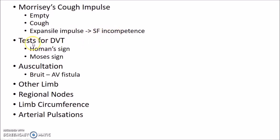There are certain tests for deep vein thrombosis: Homan's sign and Moses's sign. These are present in acute deep vein thrombosis but are not performed nowadays because the thrombus can get dislodged during testing. After palpation and special tests, you need to auscultate the varicose veins — if you hear a bruit, it indicates the presence of an arteriovenous fistula.